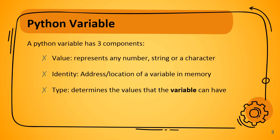The next component is the identity. The identity of a variable refers to the address or the location of a variable in memory. Once a variable is created and a value is assigned to it, the identity does not change. We can access the value using the identity, and it can be retrieved using the built-in id() function by passing the variable name in parentheses.